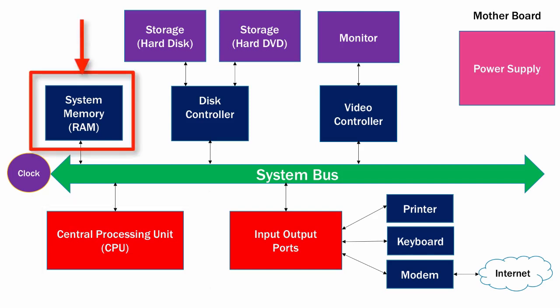System memory is a place where programs are loaded so that they can be executed. The system memory is also referred to as RAM, for random access memory. The amount of RAM and the size and speed of the system bus work together to determine the speed of the computer. If you have more RAM, you'll be able to load more programs into memory and the computer can get more work done.